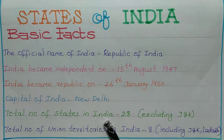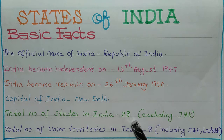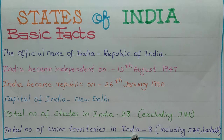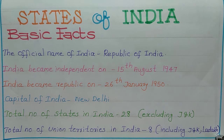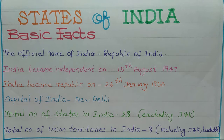The total number of states in India is 28, excluding Jammu and Kashmir, because it was 29 before. Now Jammu and Kashmir is not a state, so now there are 28 states in India. The total number of Union Territories in India is 8, including Jammu and Kashmir and Ladakh — Jammu and Kashmir was divided into 2 Union Territories: Jammu and Kashmir, and Ladakh.